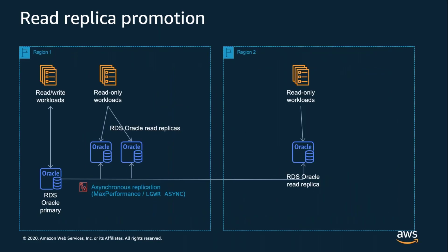RDS Oracle read replicas are primarily designed for read scaling use cases, but they can also fit into disaster recovery scenarios through the promotion feature. When you promote a read replica, replication is finished, the database is converted into a primary, and opened for read-write access — it is now a normal RDS Oracle instance and there's no going back. While read replicas use asynchronous replication, in-region replicas are typically only a few seconds behind the master, and closer to a minute for cross-region — you can verify this with the replication lag metric in Amazon CloudWatch. RPO for replica promotion is around a minute and RTO is a couple of minutes plus any steps to validate configuration and stand up application servers.